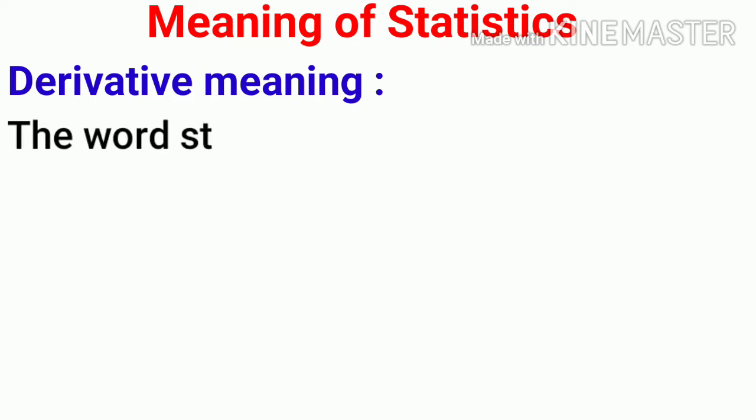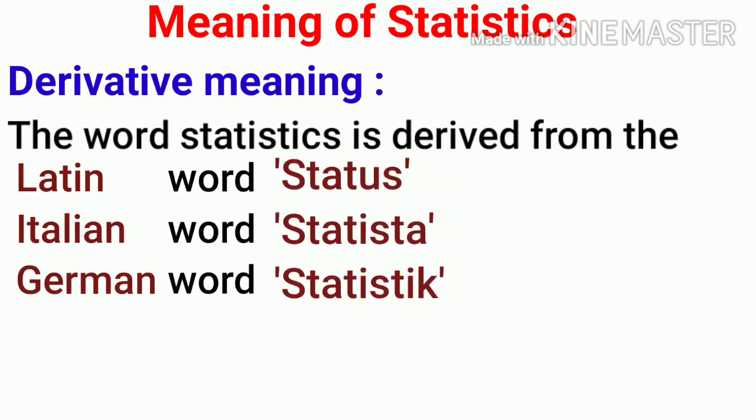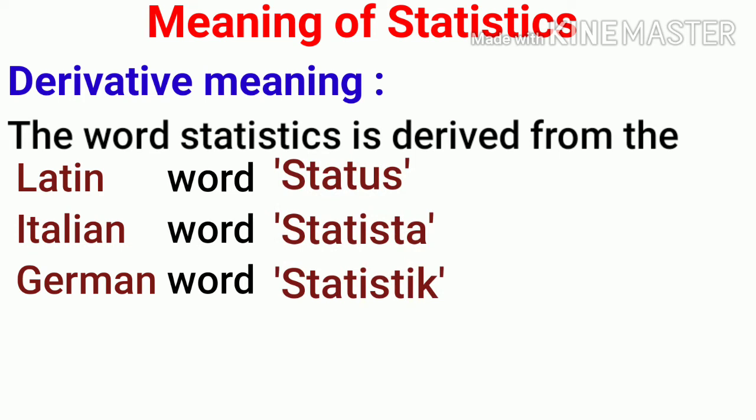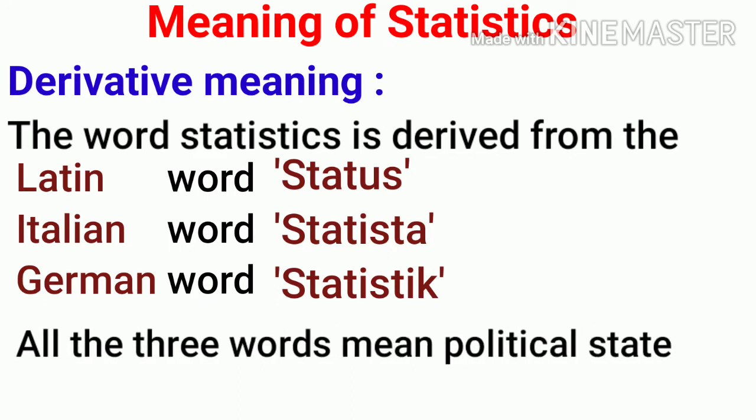Derivative meaning of statistics: The word statistics seems to have been derived from the Latin word status, Italian word statista, and the German word statistik. All three words mean political state. Thus, in old times, the word statistics meant the political situation of the state.